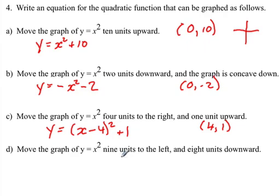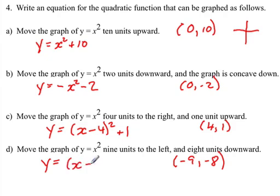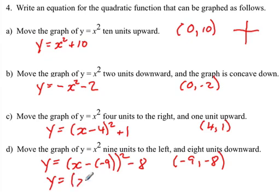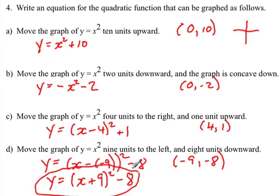And if we shift 9 units to the left and 8 units down, then the vertex is going to be negative 9, negative 8. So our h is negative 9, and we write this as y equals x minus negative 9 squared minus 8. Just to review why it's plus — remember whenever you have minus and negative, that's the same as plus. So this is the same as x plus 9 squared minus 8. And so this is your formula for d.